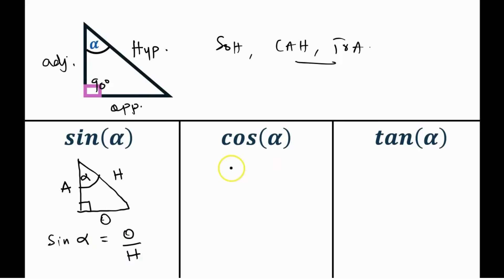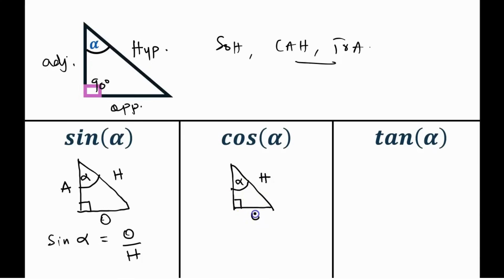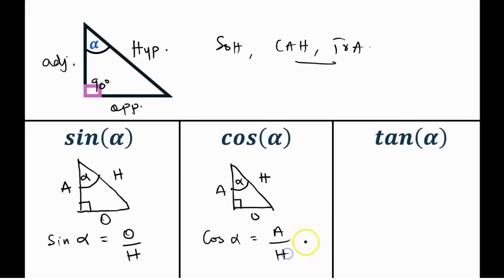For cosine, with our angle of interest alpha and the right angle here, the hypotenuse is opposite the right angle, the opposite side and the adjacent are identified accordingly. Cosine of alpha equals the adjacent side divided by the hypotenuse.